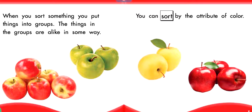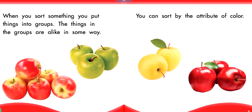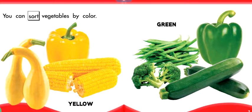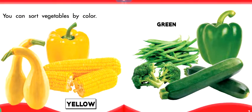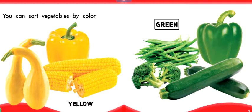You can sort by the attribute of color. You can sort vegetables by color — yellow, green.